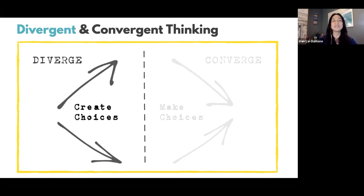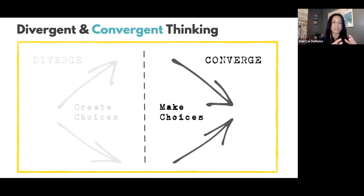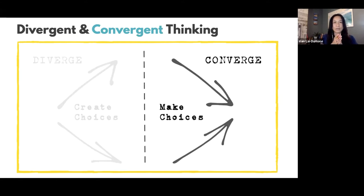Once you have exhausted all the possible ideas in divergent thinking, you move on to the convergent thinking process, which is basically where you hone your ideas. The process of convergent thinking is filtering the divergent ideas through a funnel of criteria and making some choices.